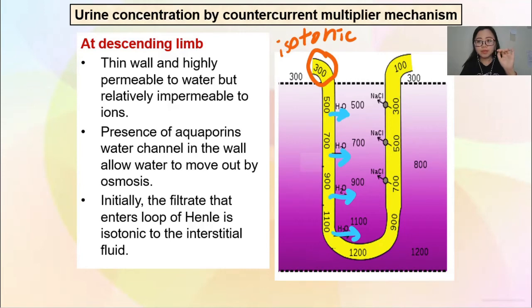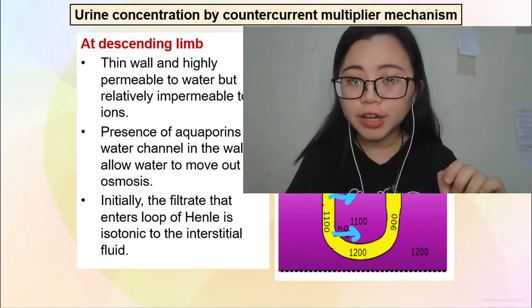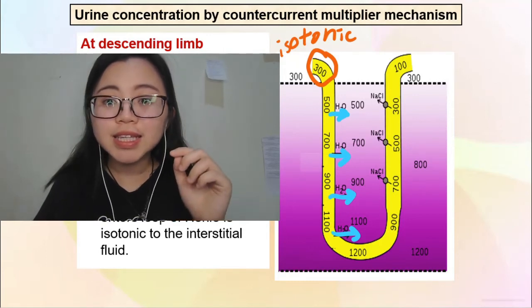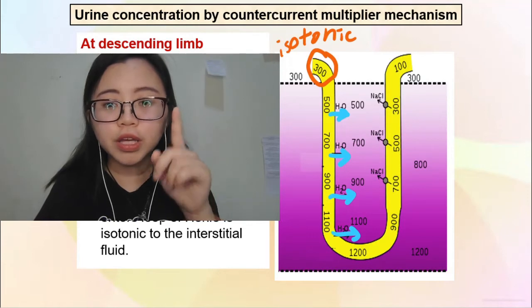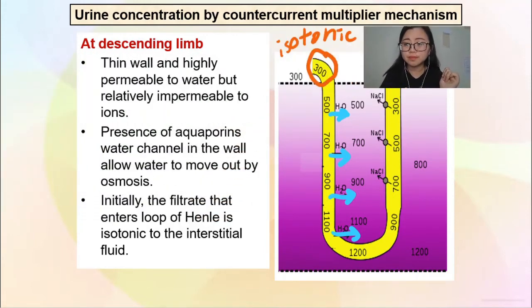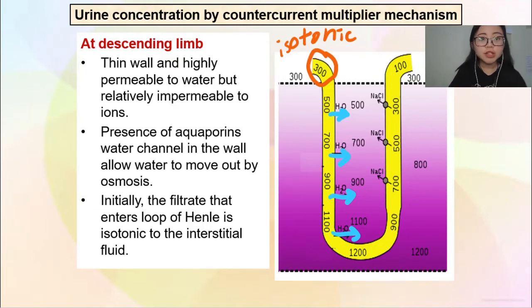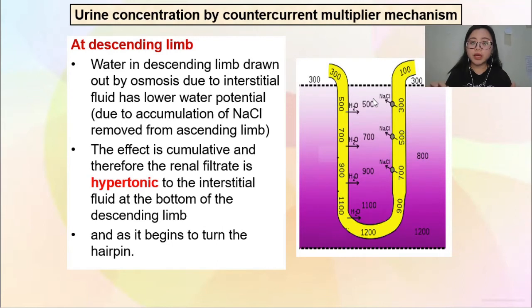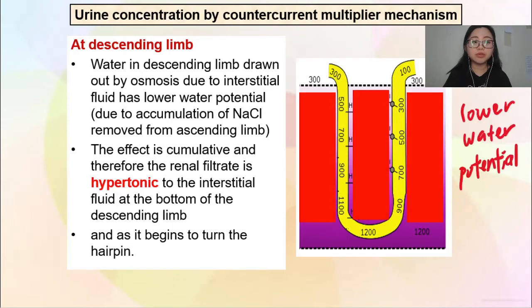You can find a diagram or draw your own loop of Henle and label along with me as I show arrows on screen — you can pause the video to do that. As the fluid flows down, water in the descending limb is drawn out by osmosis because the interstitial fluid has lower water potential due to accumulation of NaCl removed from the ascending limb. This area will have lower water potential because it has lots of NaCl. This effect is cumulative, and therefore the renal filtrate becomes hypertonic to the interstitial fluid at the bottom of the descending limb.